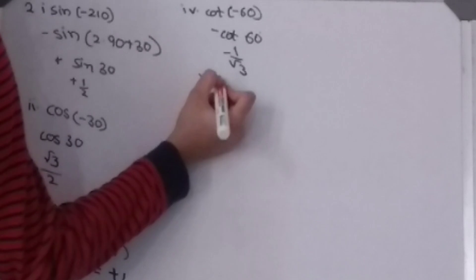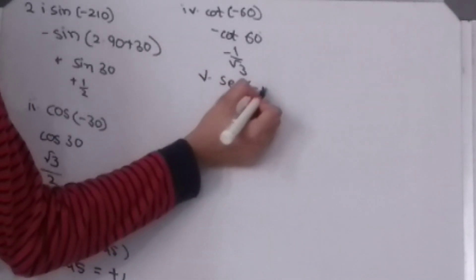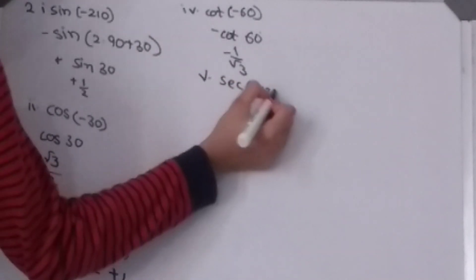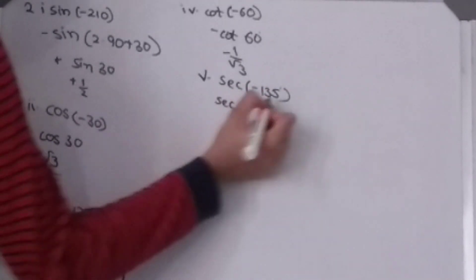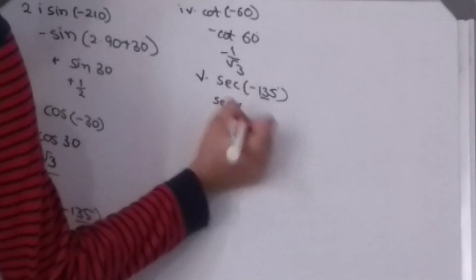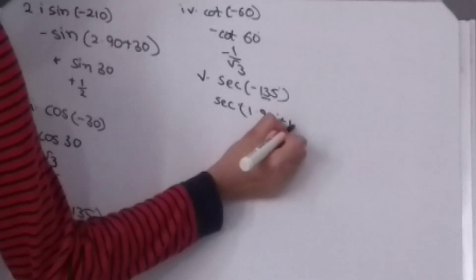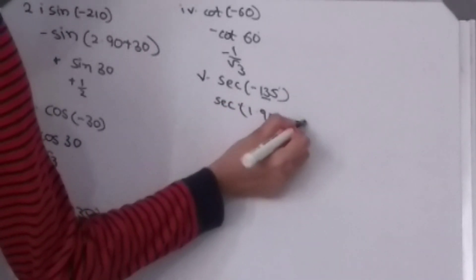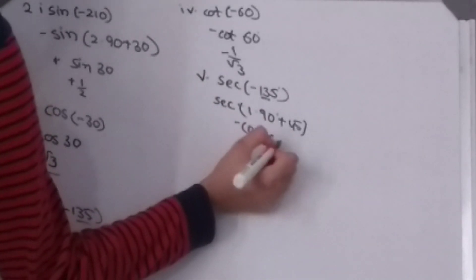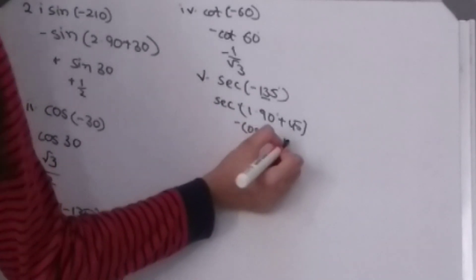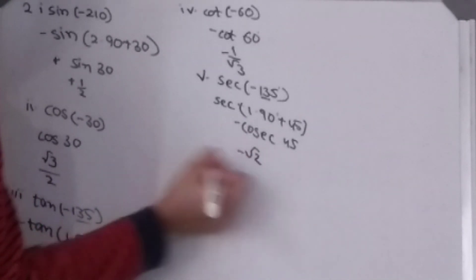Fifth question: sec(−135°). We should split this as 1×90° + 45°, giving minus cosec(45°), which equals minus √2.